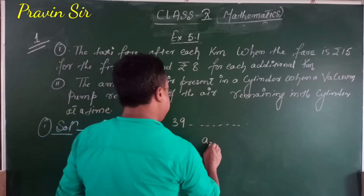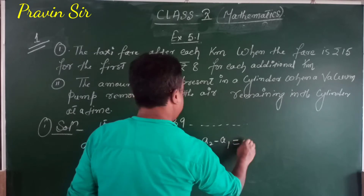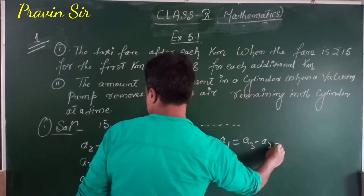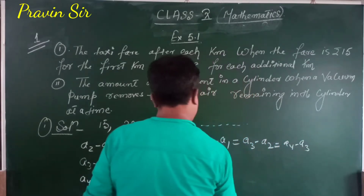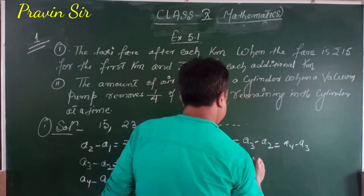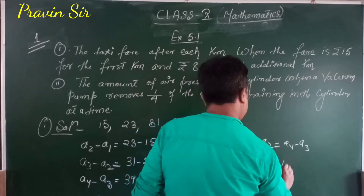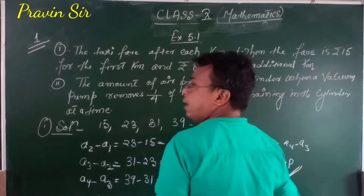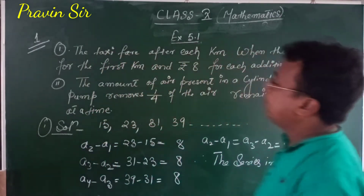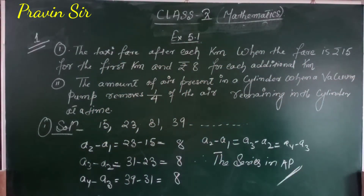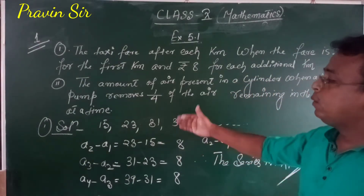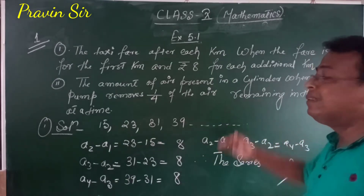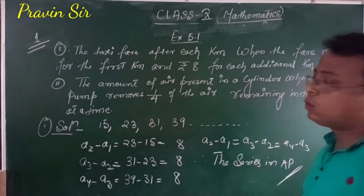Since A2 minus A1 equals A3 minus A2 equals A4 minus A3, therefore this series is in AP. I hope you understood this question — how to solve this type of word problem. We convert the word problem into a series and then check whether that series is in AP or not. Now let us go to the next question, question number two.